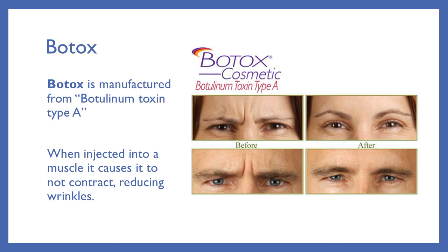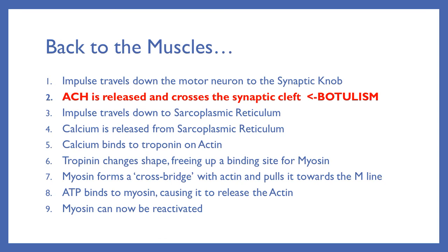Botox is actually a manufactured form of botulism. We take a toxin called botulinum toxin type A, produced by those bacteria, and we only use a tiny amount and inject it into a muscle to cause it to not contract. If you are frowning a lot and wrinkling your forehead, we inject the Botox, and that botulism toxin paralyzes those muscles — making you look younger and your skin look better because it's no longer wrinkled up. Now you know where Botox comes from. On the list of how a muscle contraction happens, this is where the botulism toxin affects it: it prevents acetylcholine from being released from the synaptic knob.